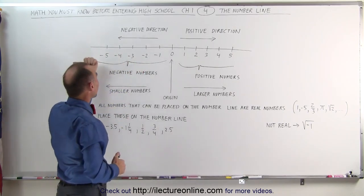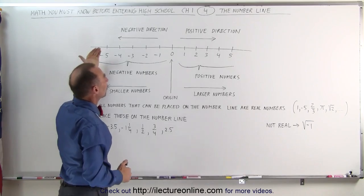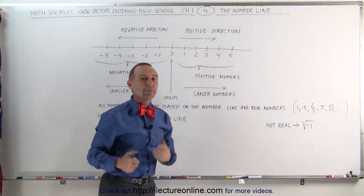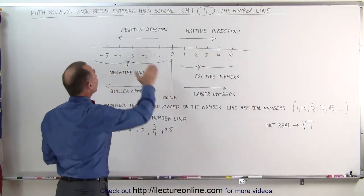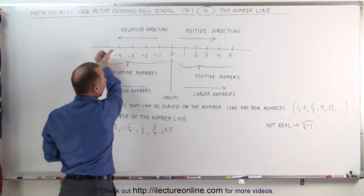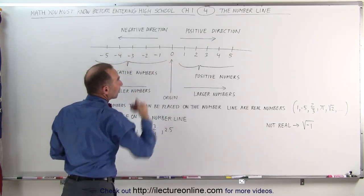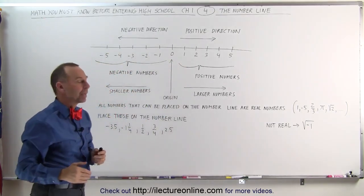Notice that when we point to the left we call that the negative direction, when we point to the right we call that the positive direction. We can be on the negative side of zero and move to the right in the positive direction, meaning the numbers will be getting bigger.